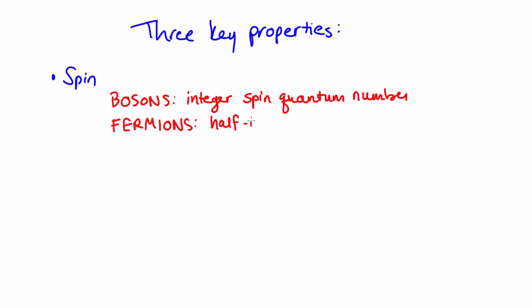Just to summarize the three key properties we covered in this video of particles. The first is spin, and the two key terms we need to keep in mind are that bosons have an integer spin quantum number. Fermions have a half-integer spin quantum number.